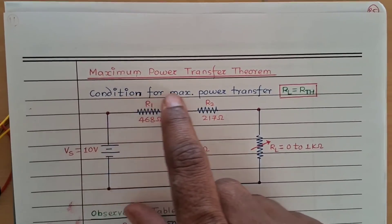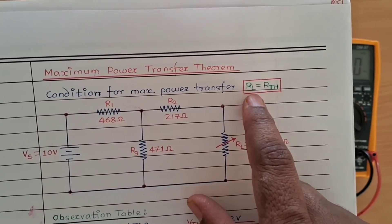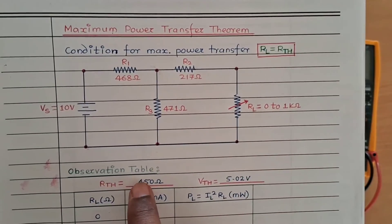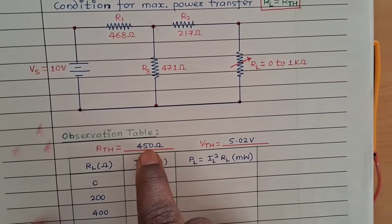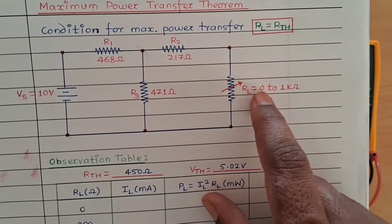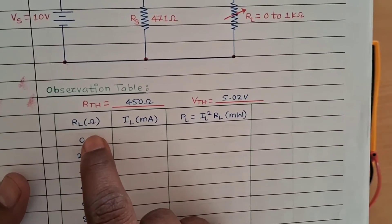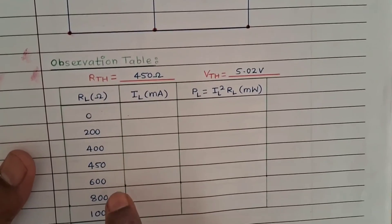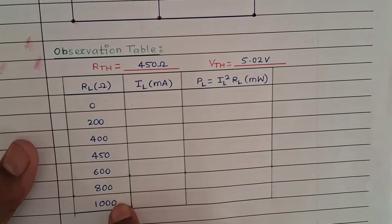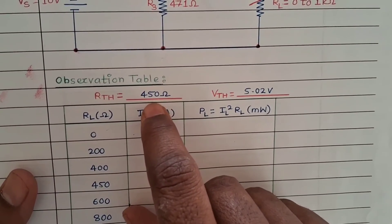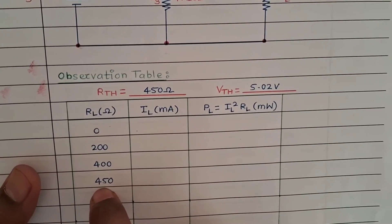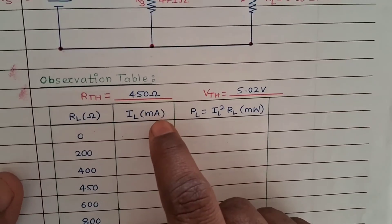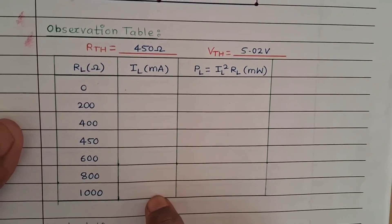According to the condition for Maximum Power Transfer Theorem, load resistance must equal the source resistance, which is the Thevenin resistance. We have calculated Rth as 450 ohms. Since our load resistance is variable from zero to one kilohm, we will change it in steps: 100, 200, 400, 600, 800, and 1000 ohms, and also take a reading at 450 ohms — the point where power must be maximum.